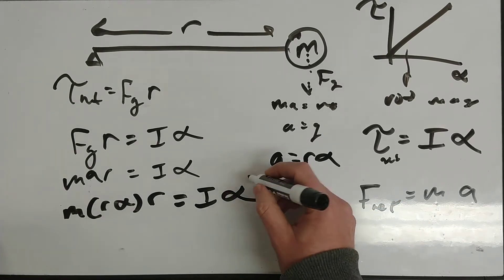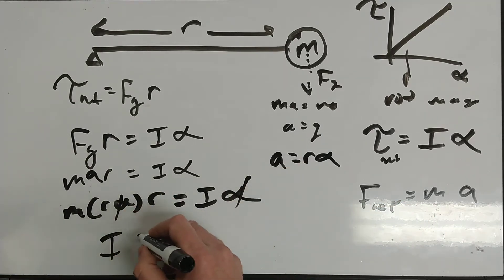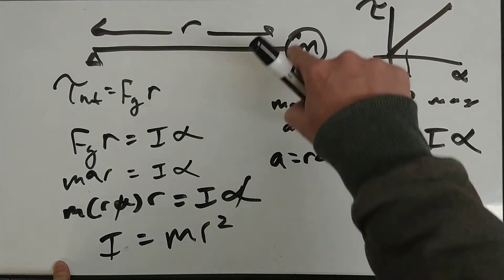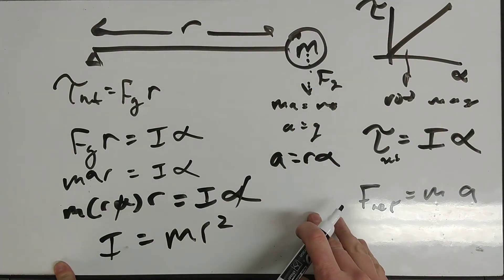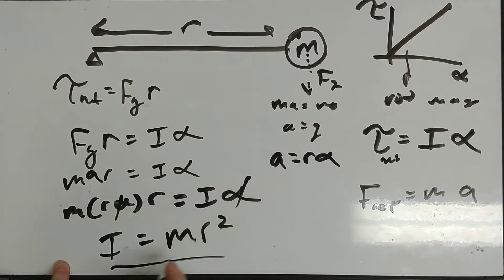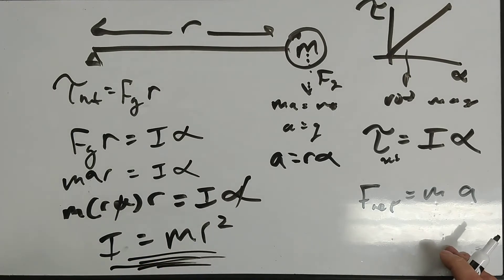Cool. Alphas cancel, I get the moment of inertia equals MR squared, so the moment of inertia for point mass is MR squared. That's kind of the fundamental definition to be able to do moments of inertia.